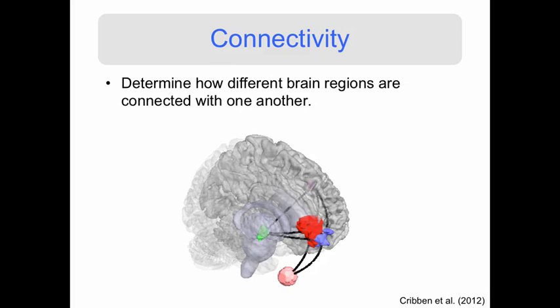The second topic is connectivity: how do you determine how different brain regions are connected with one another? Once we know that several brain regions are active during a task, we want to know how they communicate with each other and form brain networks that we can analyze.